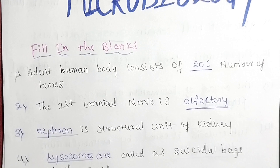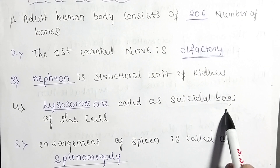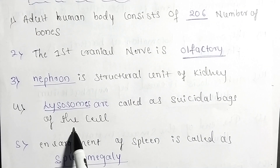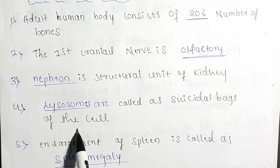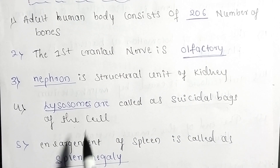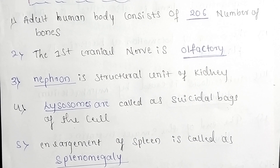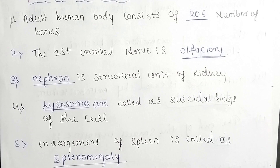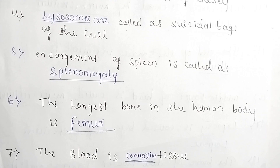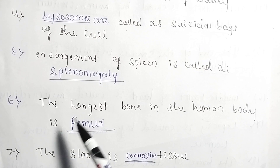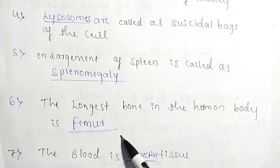Lysosomes are called the suicidal bags of the cell. Next question: enlargement of the spleen is called splenomegaly. Next question: the longest bone in the human body is the femur.